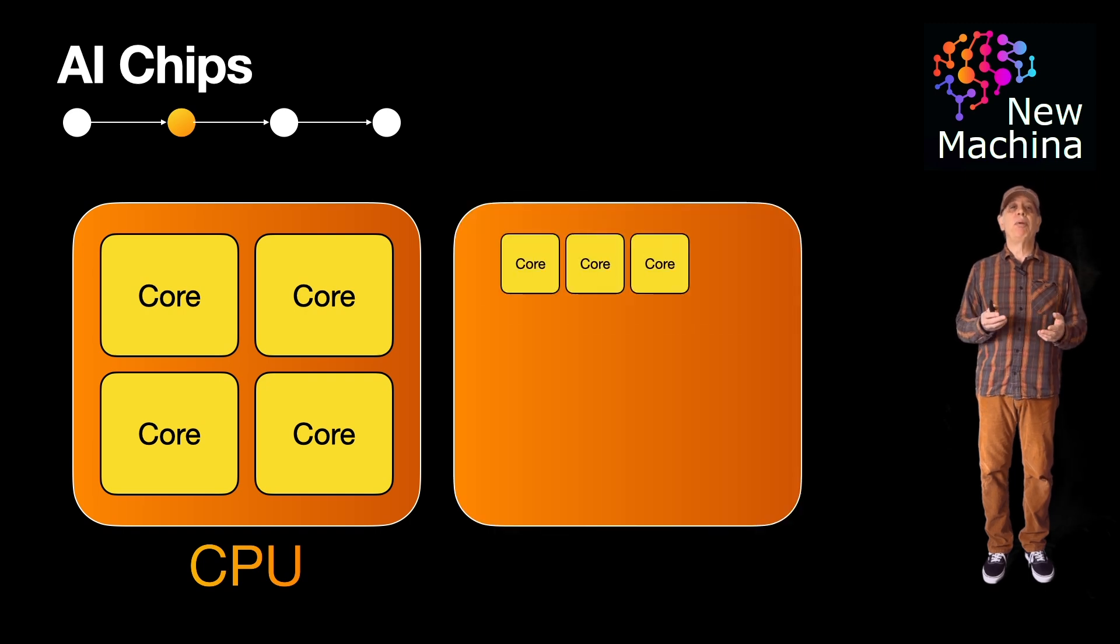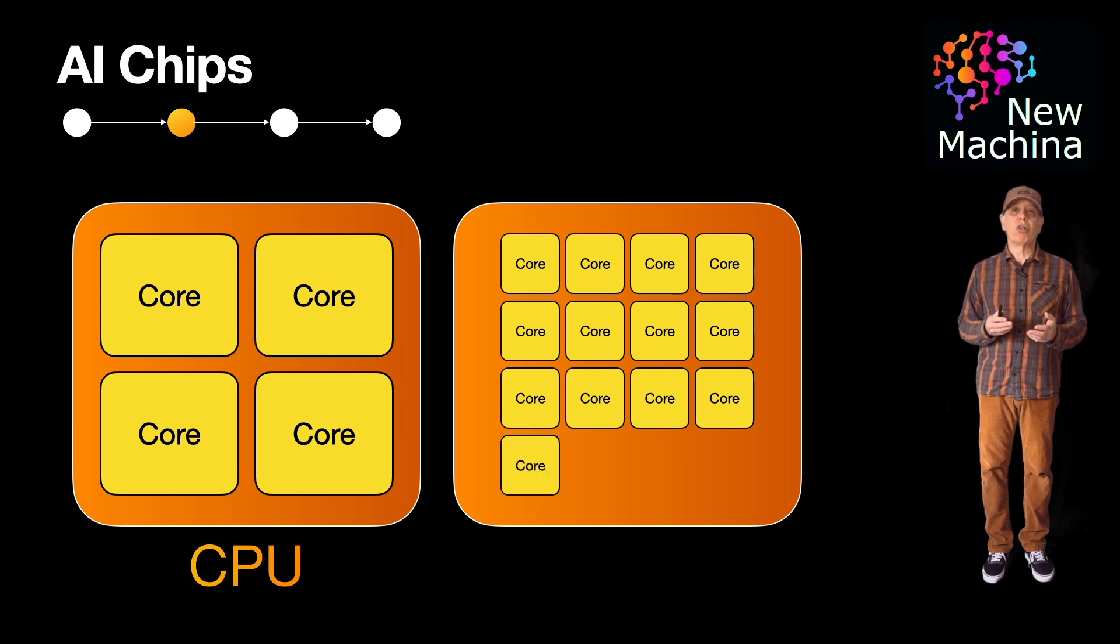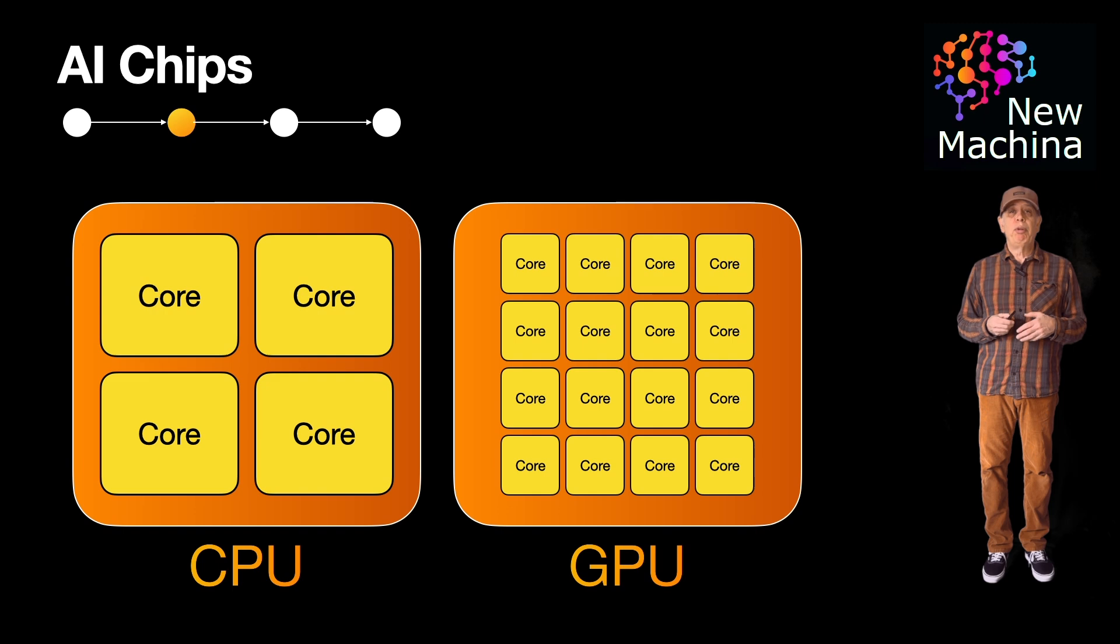So what about GPUs? Well, GPUs alternatively have simpler cores, but many more of them. GPU cores are more narrowly focused on parallel math over vectors, matrices, and tensors. GPU cores are optimized for executing the same operation over many data points, such as pixels or tensor elements simultaneously.